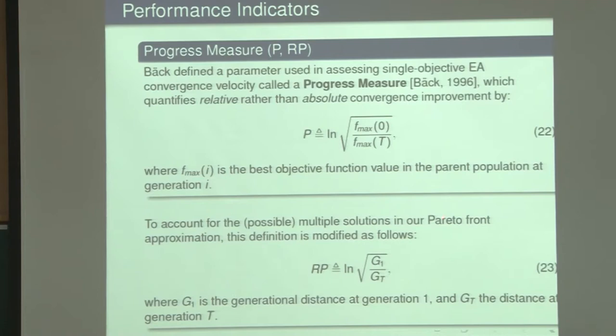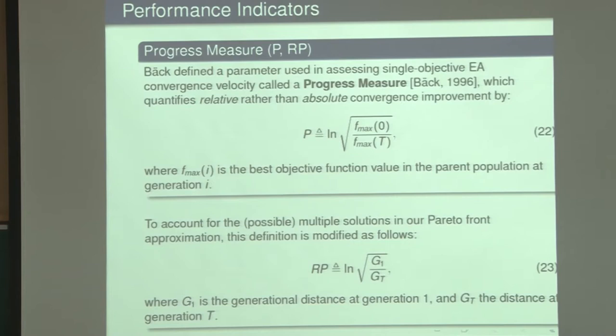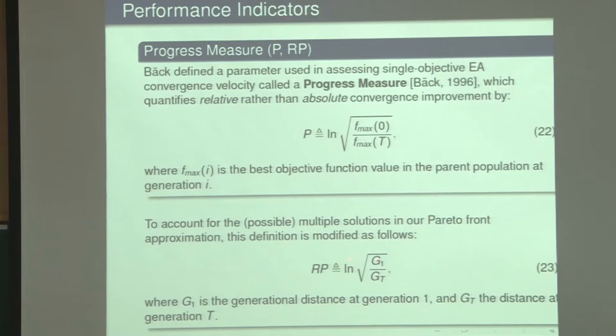The progress measure is a variation proposed by Thomas Beck. F_max is the best objective function value at generation i. It computes the best value at the beginning of search relative to the best value at the end, where T is the last generation — measuring how much we improved the objective function value. In multi-objective, Veldhuizen proposed using generational distance: what is the best GD value at generation 1 relative to the value at generation T?